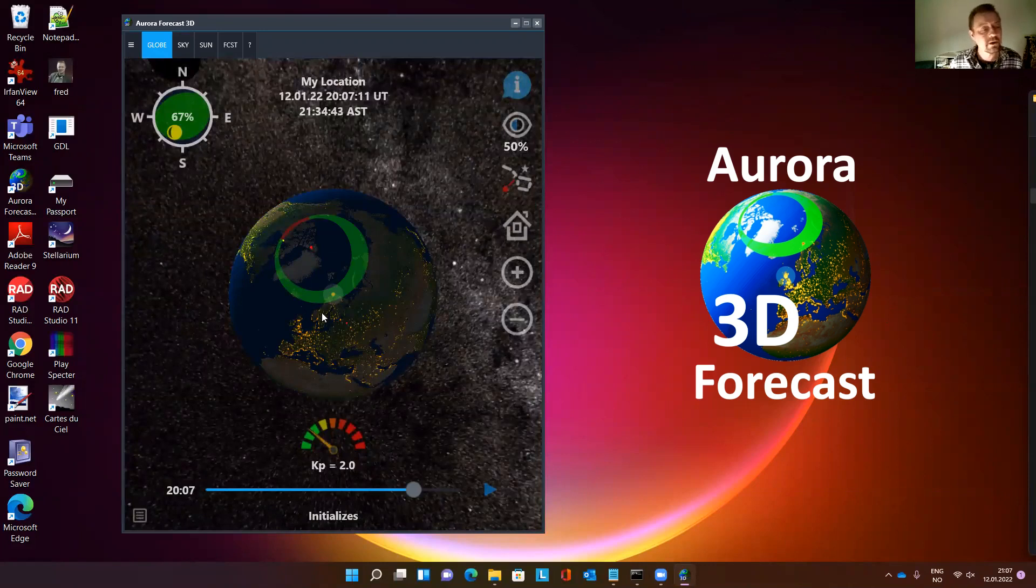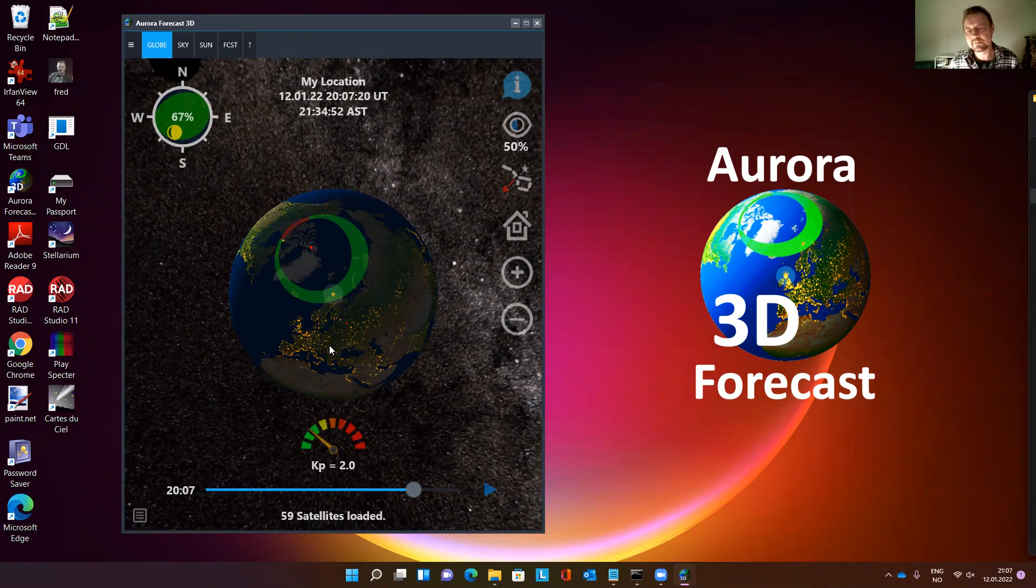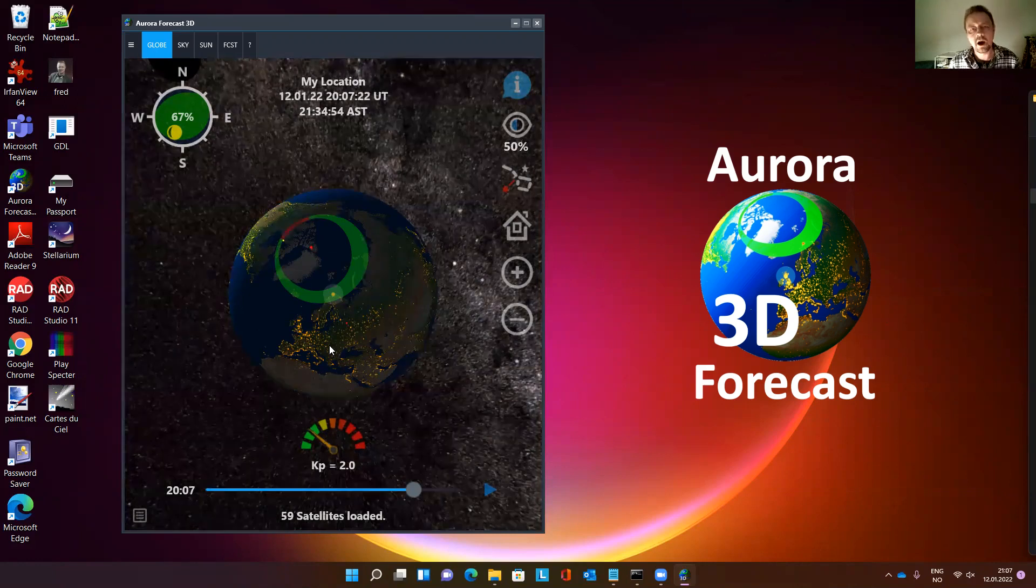With this app, you can locate the aurora oval and look at the size of it from anywhere on the planet. The app is made for Android, iOS, Windows, Linux, Ubuntu, and Mac OS.